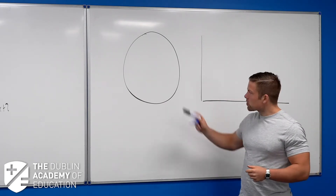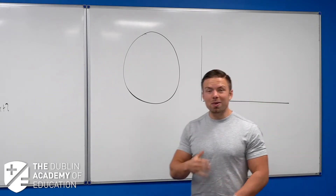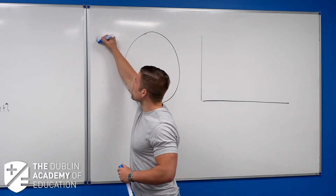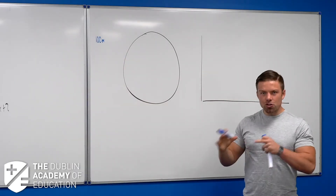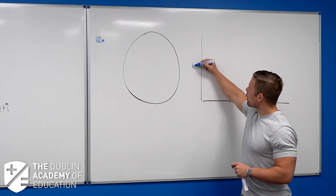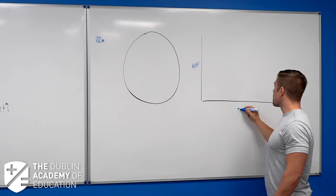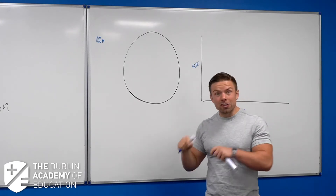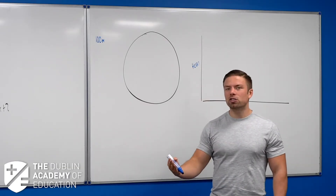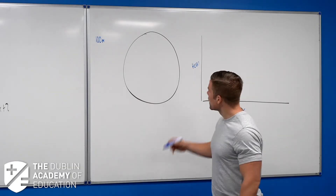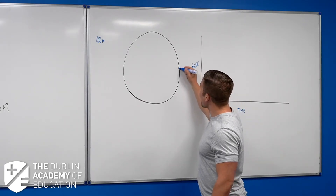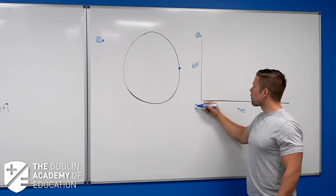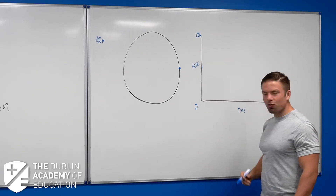I'm using a ferris wheel because it's easy to conceptually understand. Let's pretend this is the ferris wheel here and you are trying to monitor me on it. This ferris wheel is 100 meters in height — 100 meters tall. You're going to graph my height over time. Let's say you started looking at me when I'm halfway up, so I'm 50 meters up.